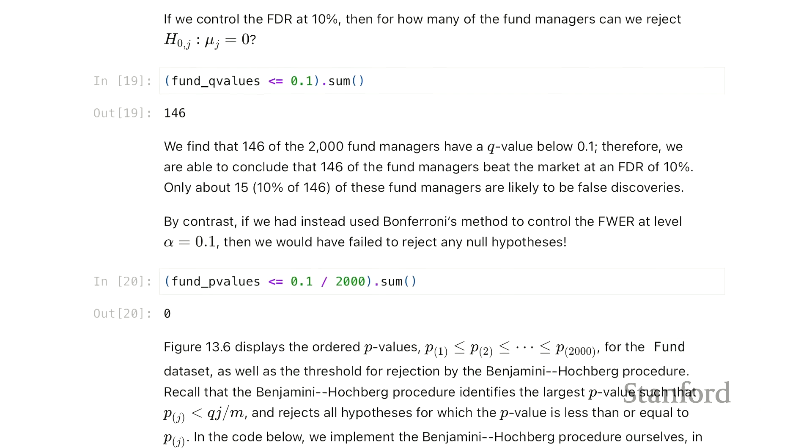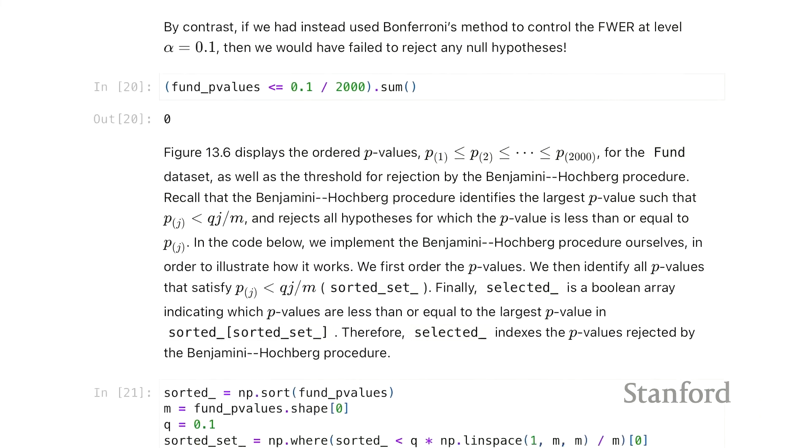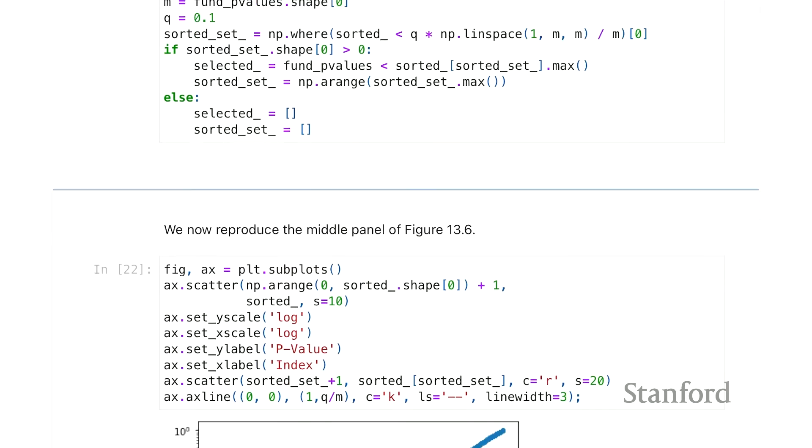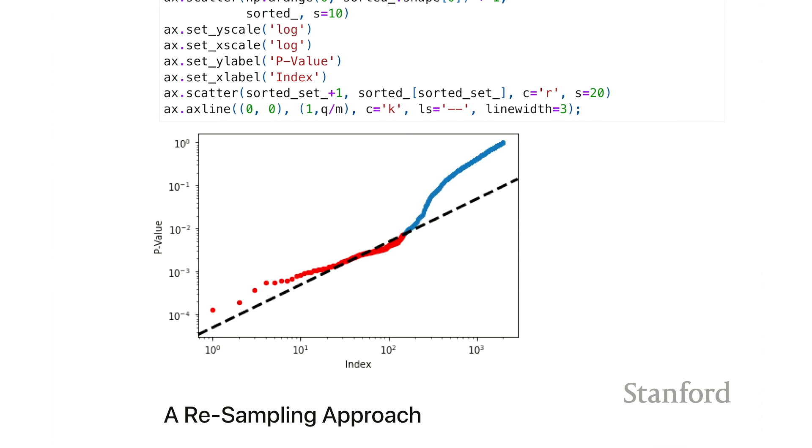There's a plot that goes along with the Benjamini-Hochberg procedure that's quite popular, and we're just going to take a look at it below. There's a particular rule for Benjamini-Hochberg, and I'll just write it quickly here. It compares the j-th smallest p-value, that's p underscore j, to the quantity alpha, let's say 10%, 0.1 times j over m. So it compares these two things. It asks whether the j-th p-value is smaller than that threshold or not. And that's what this line here represents.